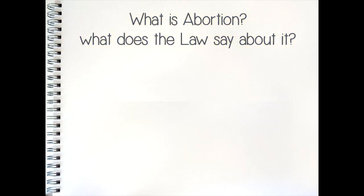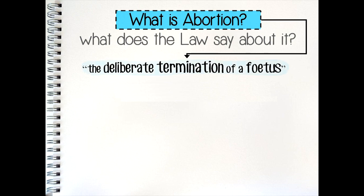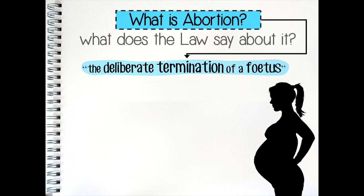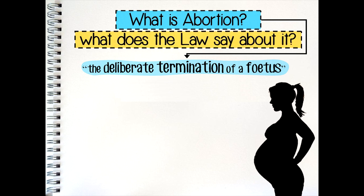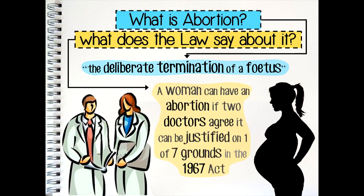Let's begin with the first question: what is abortion? Abortion is defined as the deliberate termination of a fetus. It describes a medical procedure in which a doctor intentionally brings about the ending of a pregnancy by ending the life of the fetus. In the UK, a woman is legally allowed to have an abortion if two doctors agree that it can be justified under one of the seven possible grounds set out in the 1967 Abortion Act, which is when it was made legal.